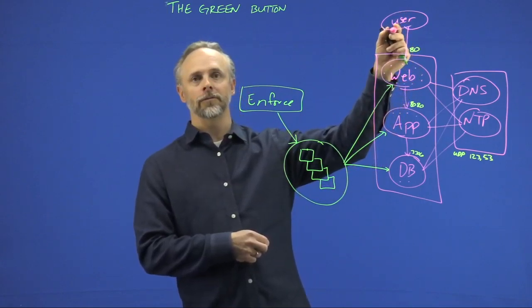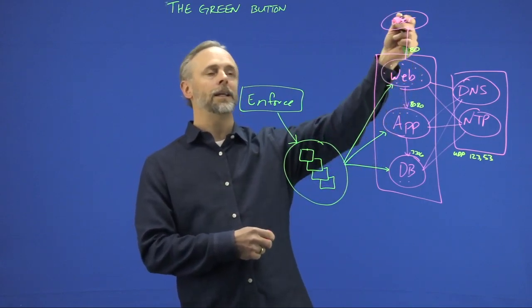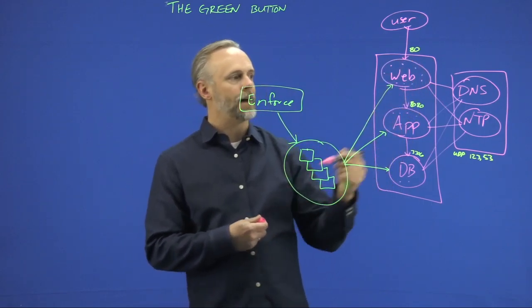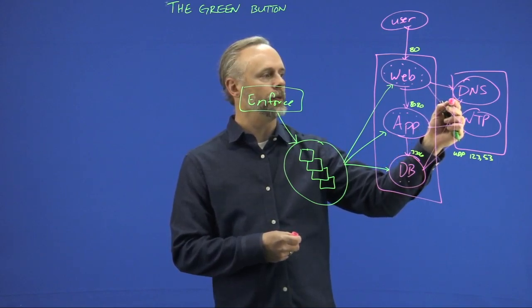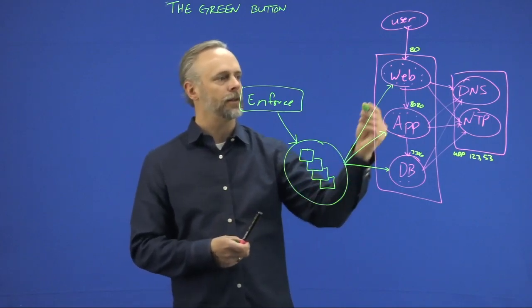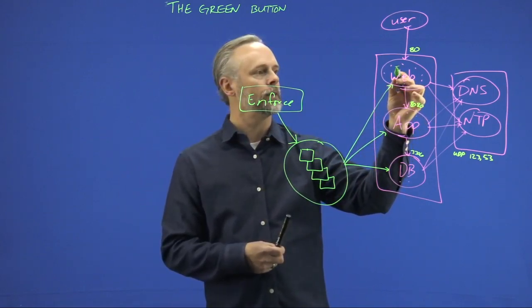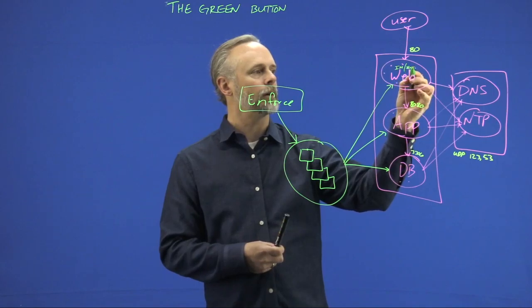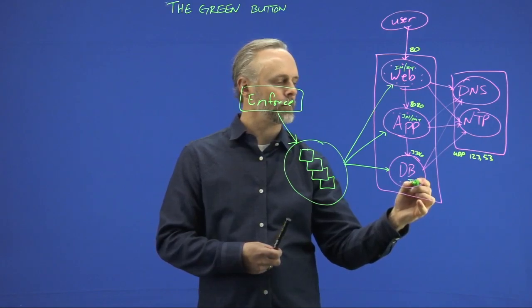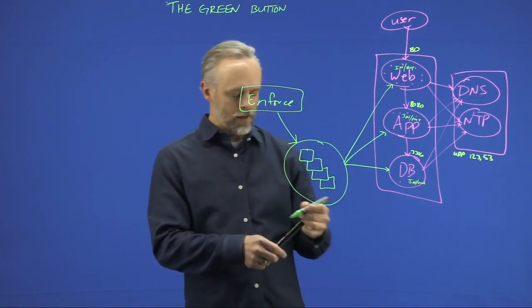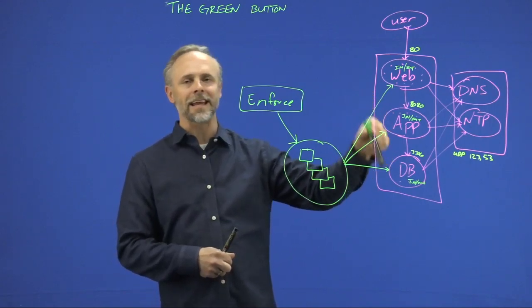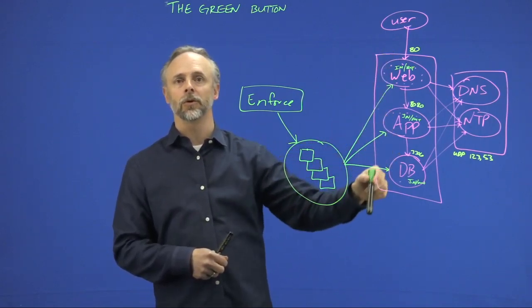So we're going to push a rule to every one of those that says, you're allowed to allow inbound from the application tier to the database on port 3306. Inbound from the web tier to the app tier on 8080. Inbound from the user environment or the internet on port 80. And then we're also going to have outbound UDP 53 and 123. And at that point, we're managing essentially the native controls on each one of those workload endpoints.